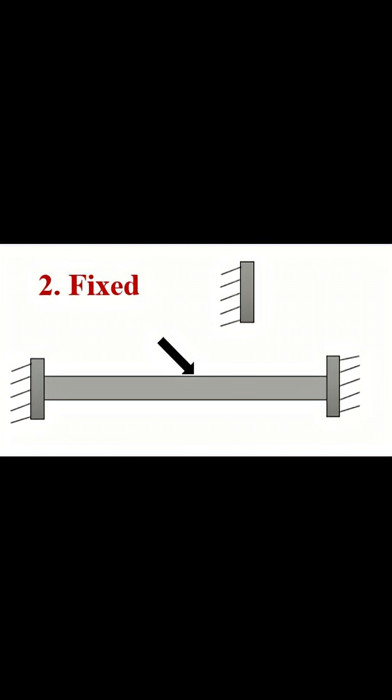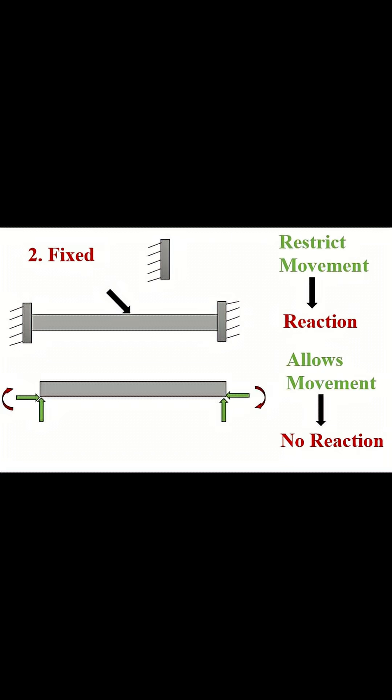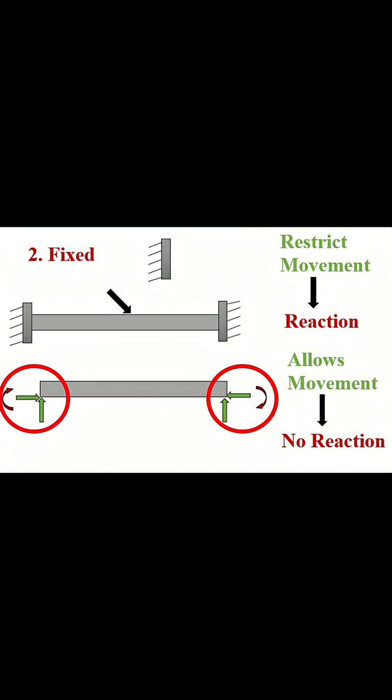A beam resting on a fixed support does not allow rotation or movement. It provides three reactions: vertical, horizontal, and moment. This makes the joint completely rigid.